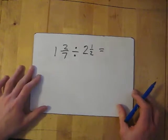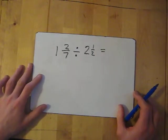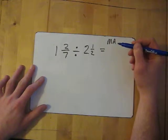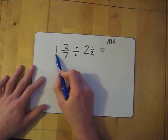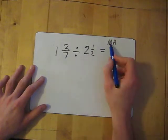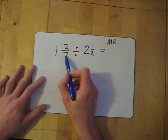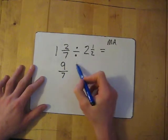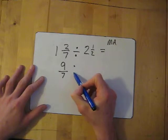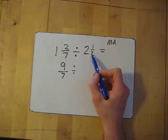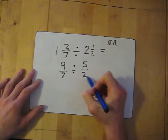Let's have a good look at a couple. 1 and 2 sevenths divided by 2 and a half. First things first: MA. We've got mixed numbers, so we need to convert them to improper fractions. We do the whole number times the denominator: 1 times 7 is 7, add the 2 gives me 9 over 7. Then 2 times 2 gives me 4, add the 1 is 5 over 2.